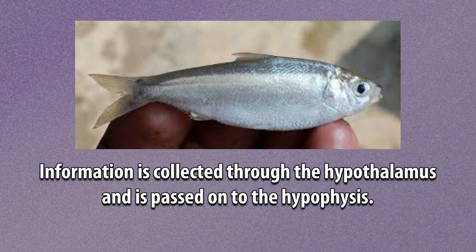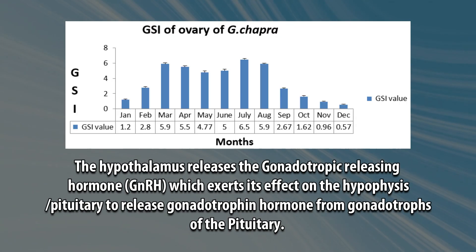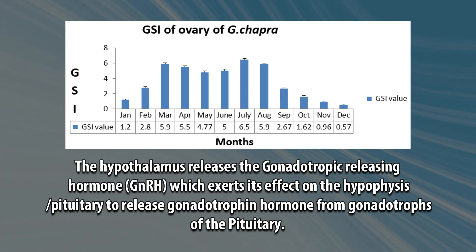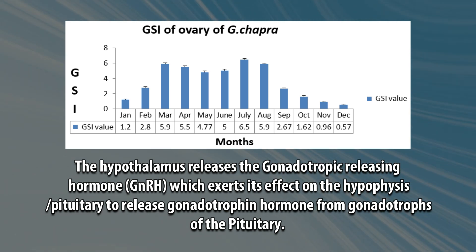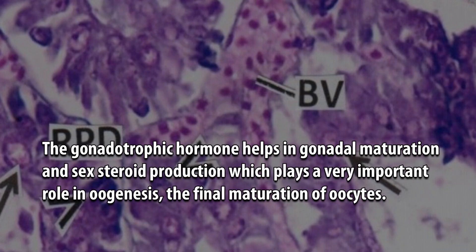Information is collected through the hypothalamus and passed on to the hypophysis. The hypothalamus releases the gonadotropic releasing hormone, GnRH, which exerts its effect on the hypophysis to release gonadotrophin hormone from the gonadotrophs of the pituitary. The gonadotrophic hormone helps in gonadal maturation and sex steroid production, playing a very important role in eugenesis — the final maturation of oocytes.